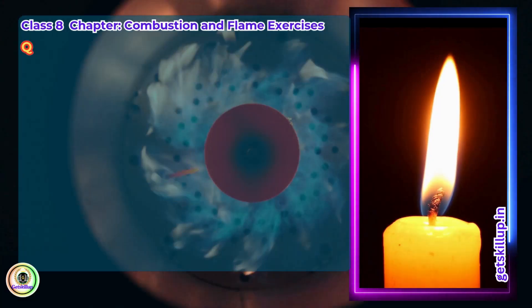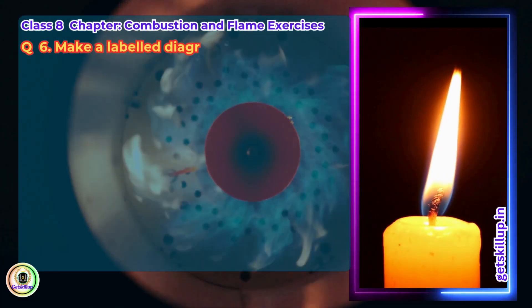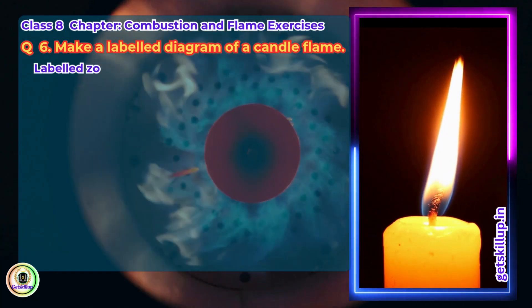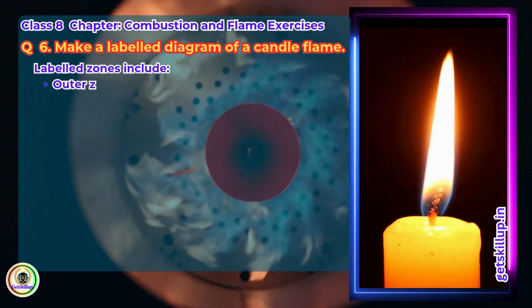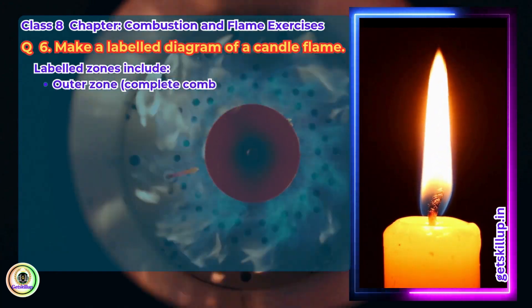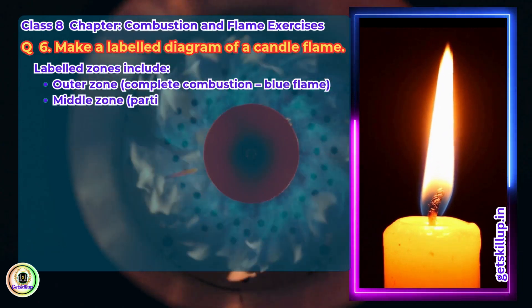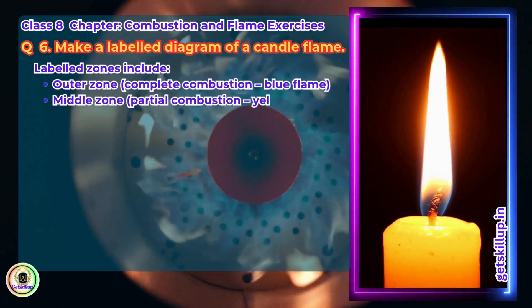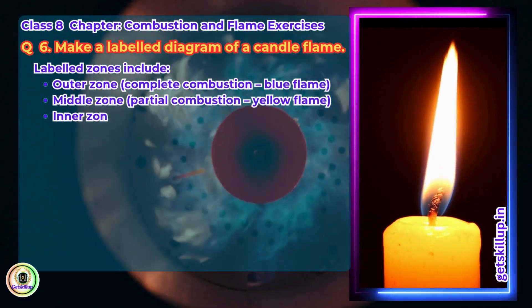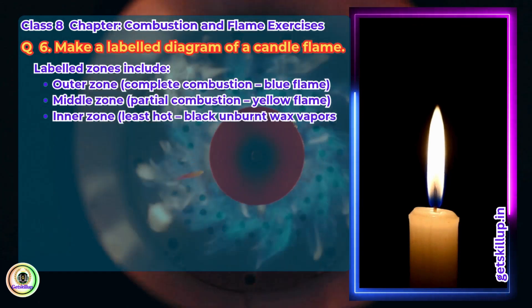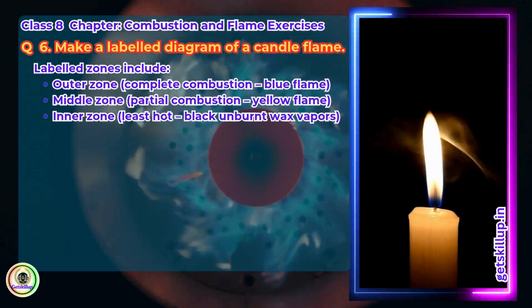Question 6: Make a labeled diagram of a candle flame. Answer: Labeled zones include the outer zone — complete combustion, blue flame; middle zone — partial combustion, yellow flame; inner zone — least hot, with black unburned wax vapors.